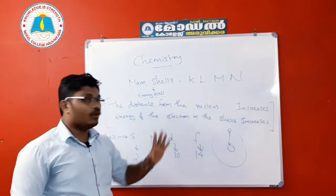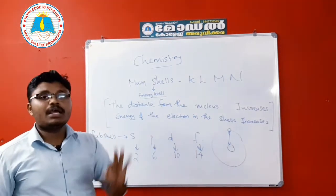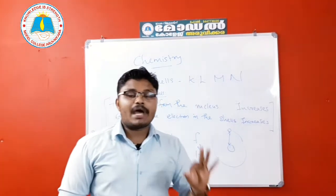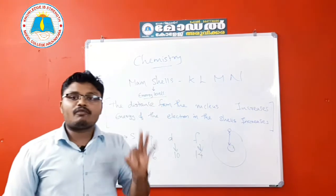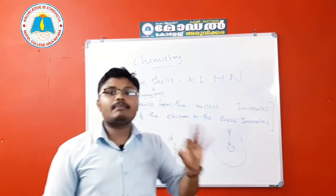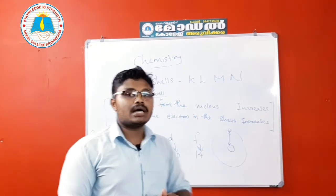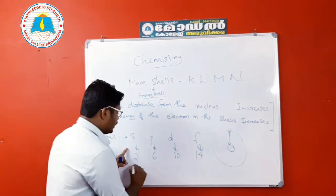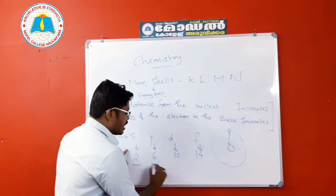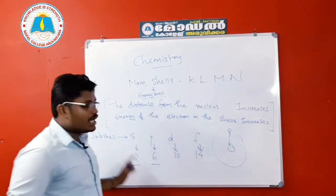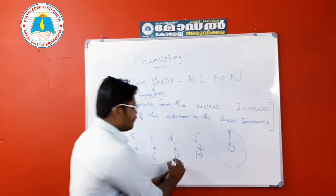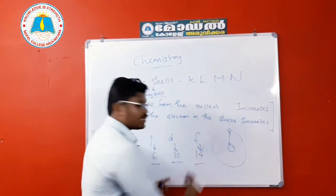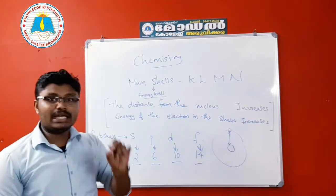The first part of the shell is SPDF. The maximum number of electrons in each sub-shell: S sub-shell has 2 electrons, P sub-shell has 6 electrons, D sub-shell has 10 electrons, and F sub-shell has 14 electrons.